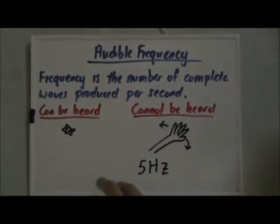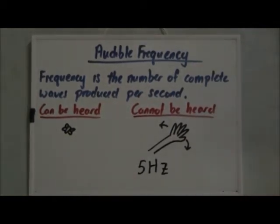Meaning for a normal person, the fastest that you can go is about 5 vibrations every second. So this 5 hertz does not fall within the audible frequency of a human being.